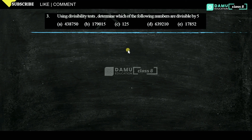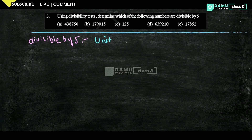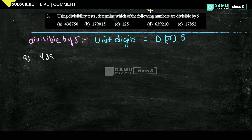Our third question: using divisibility tests, determine which of the following numbers are divisible by 5. Any number divisible by 5 must have a unit digit equal to 0 or 5. Our first number is 438750 — the unit digit is 0, so yes, it is divisible by 5.